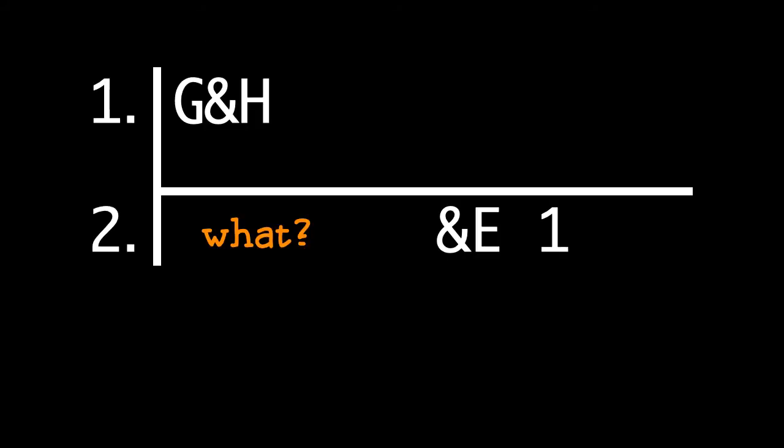What should our AND elimination rule be? To put the question differently, suppose you know G and H. What conclusion does that allow you to draw?